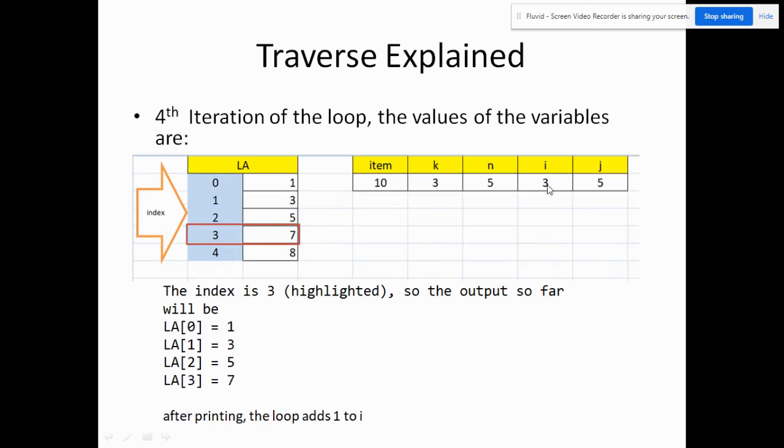I now is equal to 3. The output now will be, in addition to what we have previously, we have LA 3 equals 7. Then again, add one to i.